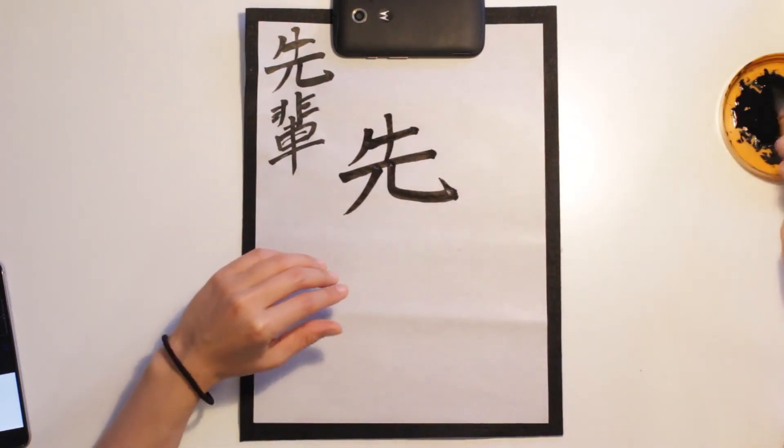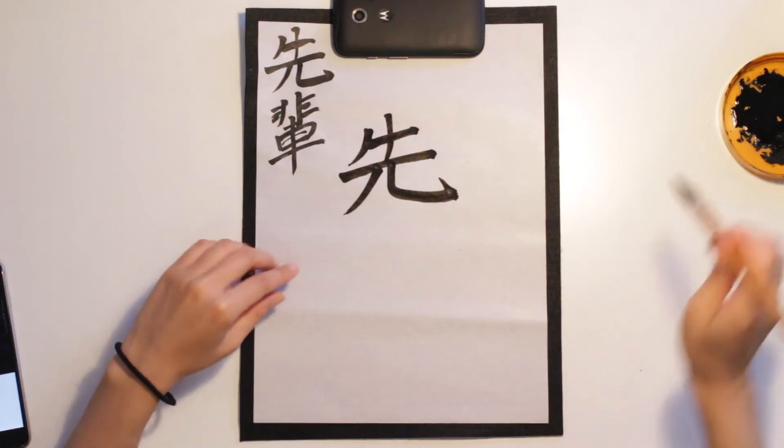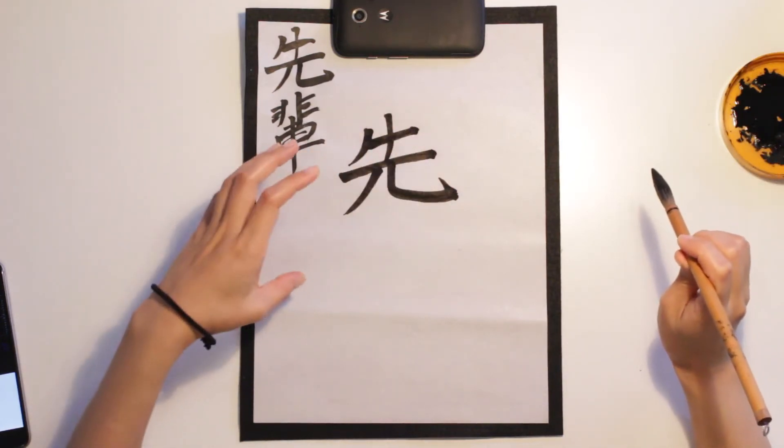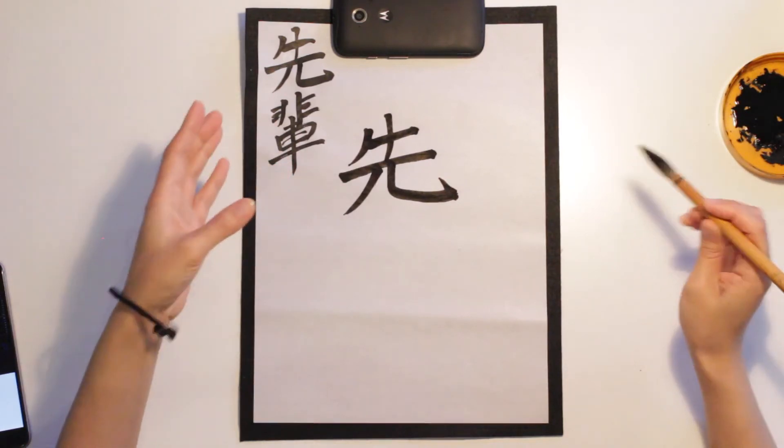Japanese people use this. This way is senpai. Sen, saki means former.